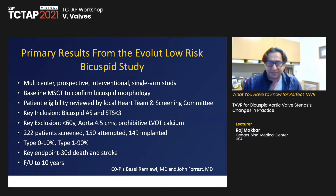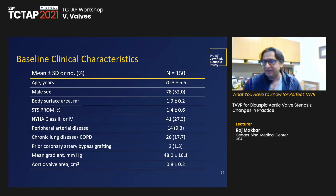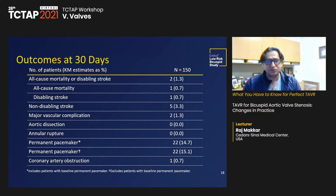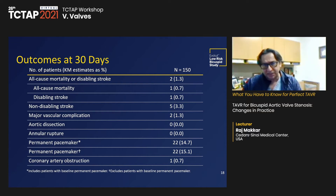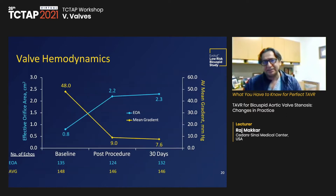Good data are also present with the Evolute low-risk study — 222 patients, mostly type 1 bicuspids, average age 70 years. All-cause mortality or disabling stroke was 1.3%; all-cause mortality at 30 days was 0.7%; aortic rupture 0%. Pacemaker rates were a little higher compared to balloon expandable. The theme is emerging that we can perform TAVR with both balloon-expandable and self-expanding valves in bicuspid aortic stenosis.